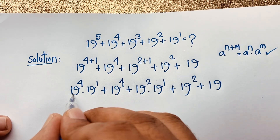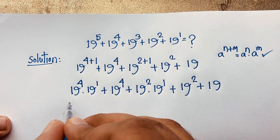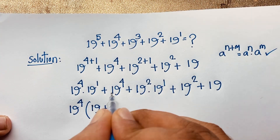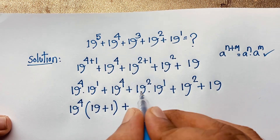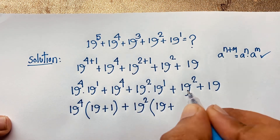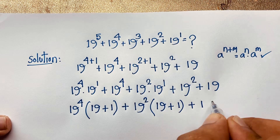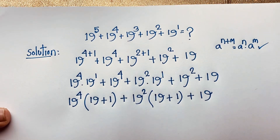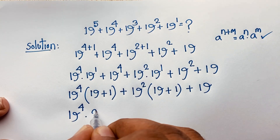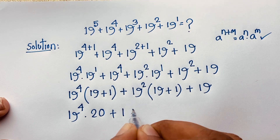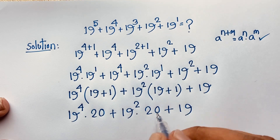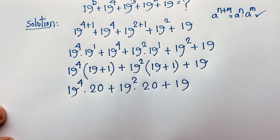At this point, 19 power 4 is common. Taking 19^4 as a common factor: dividing each term gives 19, plus 1, plus 19 — that is (19 + 1 + 1). So we get 19^4 times (19 + 1), which is 19^4 times 20, plus 19^2 times (19 + 1), which is 19^2 times 20.